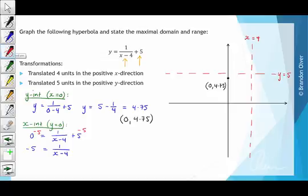Now we're going to multiply both sides of the equation by x minus 4, so we have negative 5 times x minus 4 equals 1. If we divide both sides by negative 5, we find that x minus 4 equals negative one-fifth.